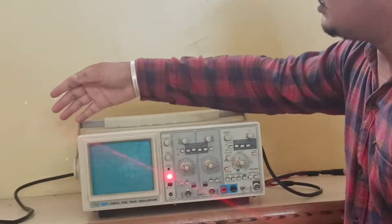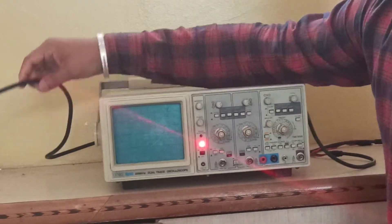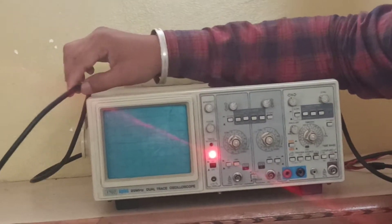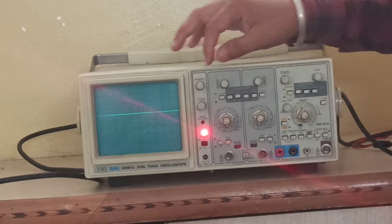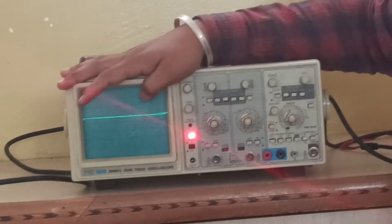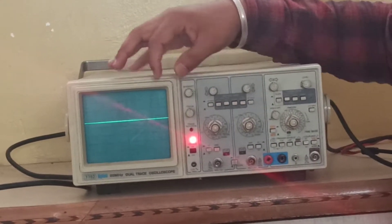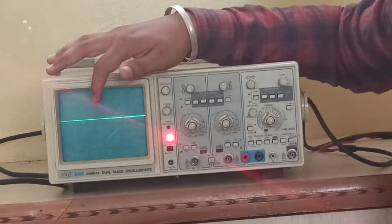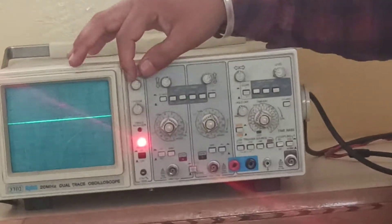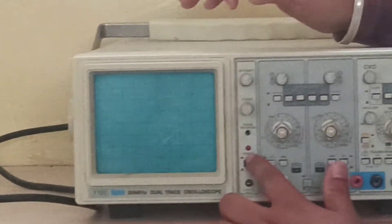We give supply to the CRO with power cable and we see the signal, AC and DC signal in CRO, and this is the on-off button.